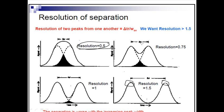This resolution of separation can be measured with a formula. We call it ΔtR divided by the average width. Here, Δ means the difference, and tR means the retention time. That means we have tR2 minus tR1, so that gives us ΔtR.